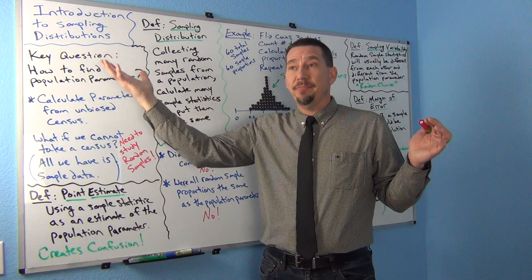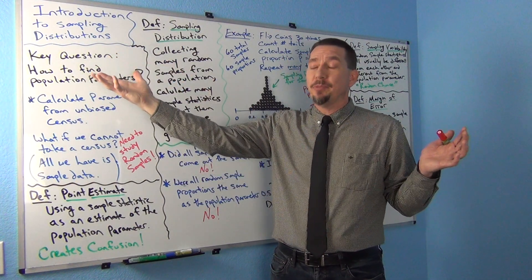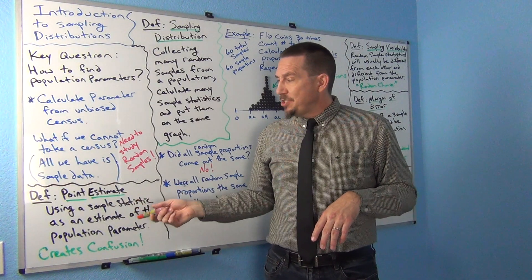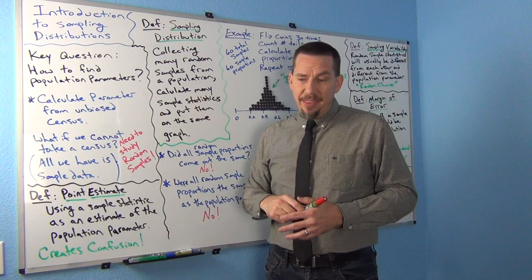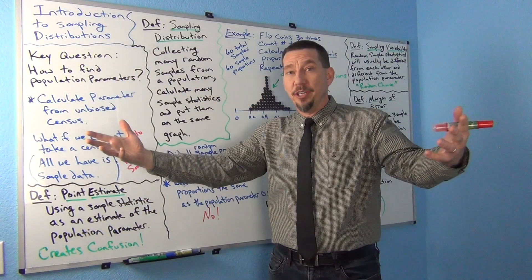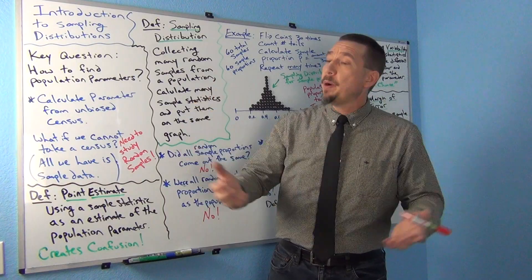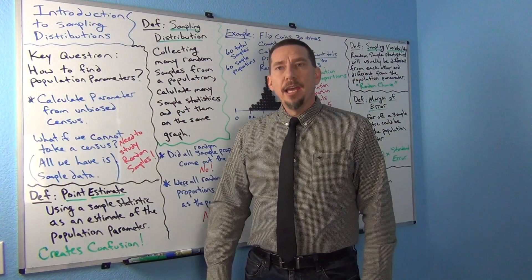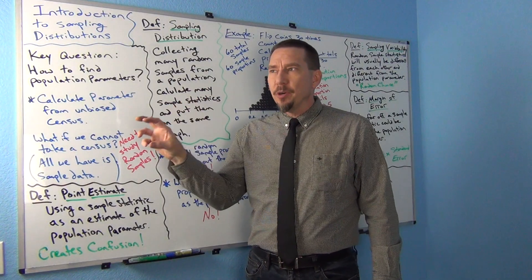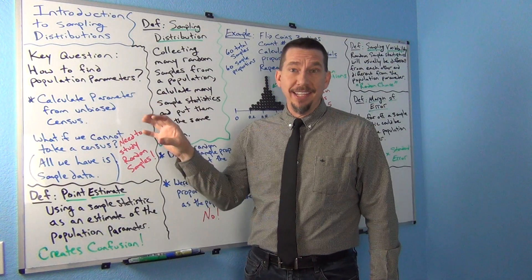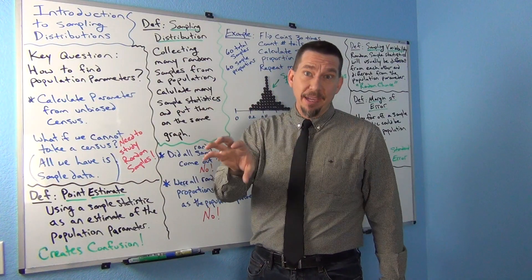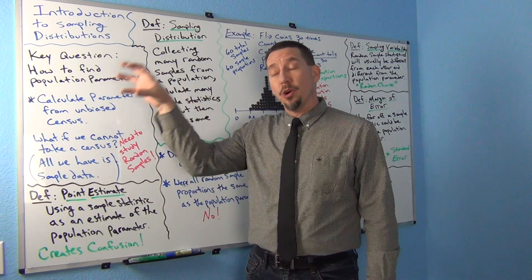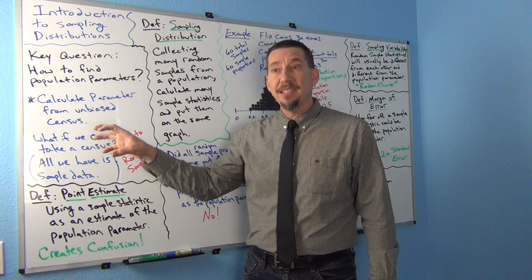We're going to say that is the population parameter. A lot of my students read articles all the time that claim to know what's going on with millions of people. They claim the population mean average salary is $45,000 per year. They don't realize that that number was not actually the population parameter like it said in the article — it actually came from a sample. They took a random sample, calculated the sample mean, and then just told us that is the population mean.